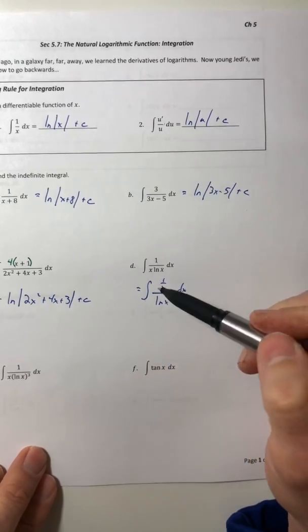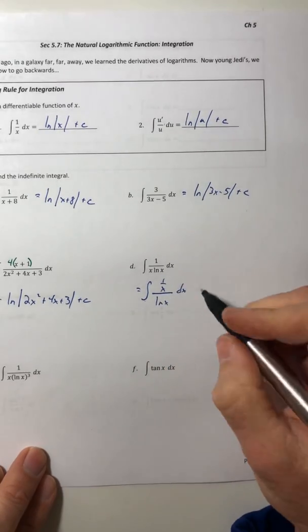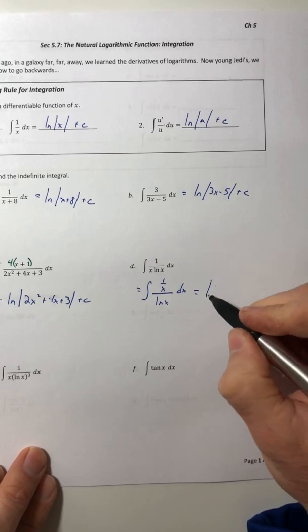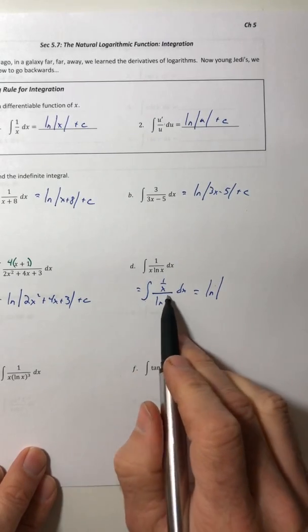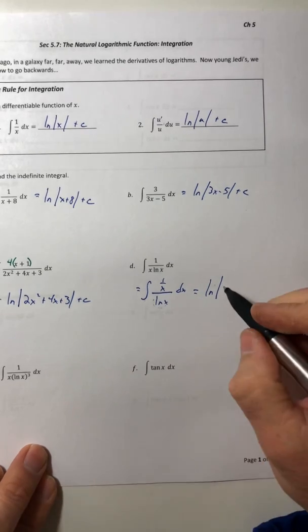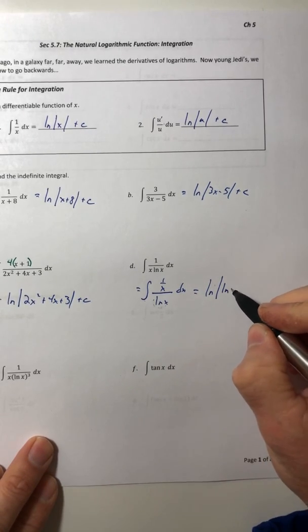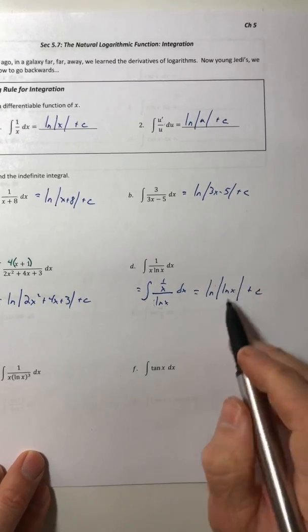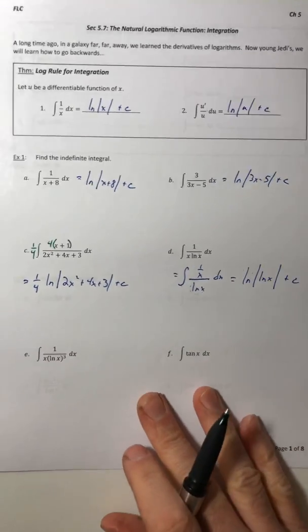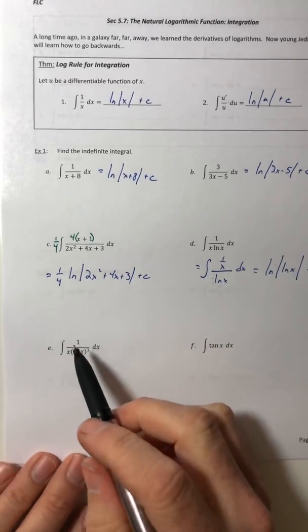And now I have u prime over u. So it's ln of the absolute value of whatever that denominator is, and that denominator is another ln of x. So ln of the absolute value of ln of x.